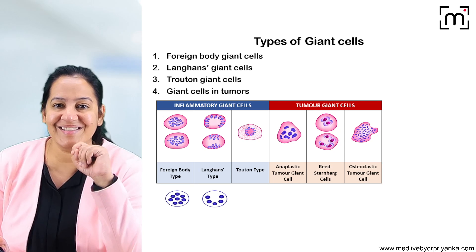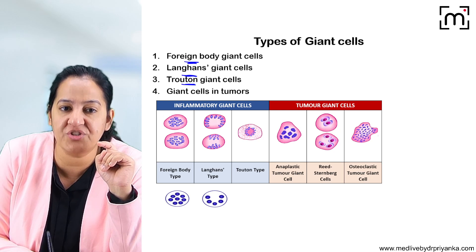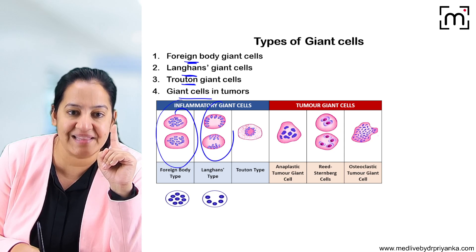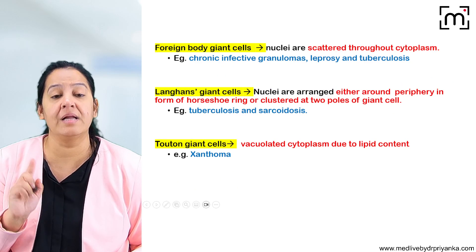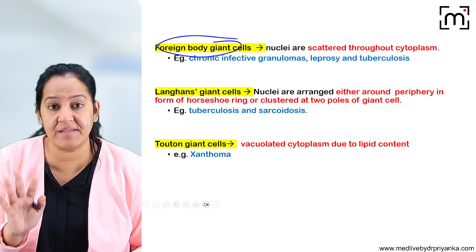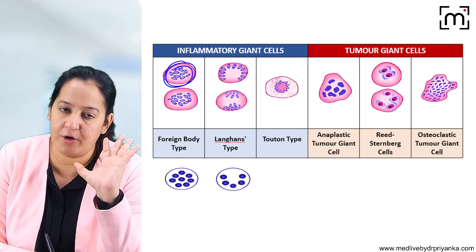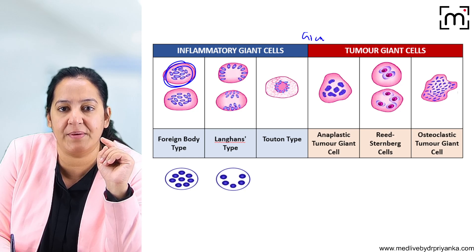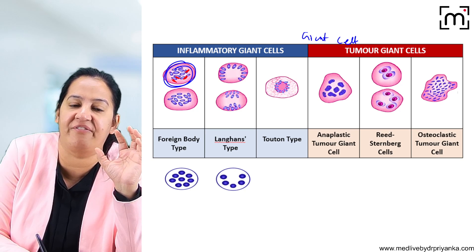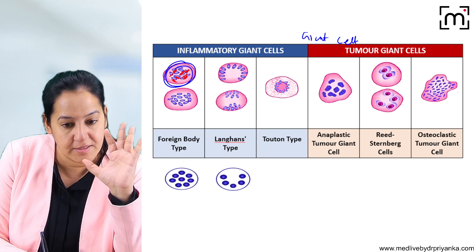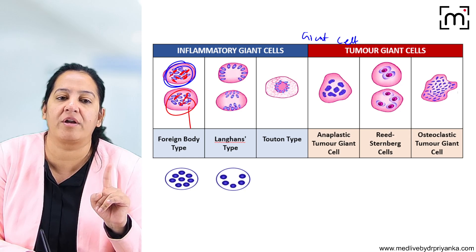Now, types of giant cells. There are four types: foreign body giant cell, Langhans giant cell, Touton giant cell, and giant cells in tumors. In all of them there are multiple nuclei — that's what makes them giant cells. In foreign body giant cells, the nuclei are scattered randomly anywhere in the cytoplasm with no fixed pattern.